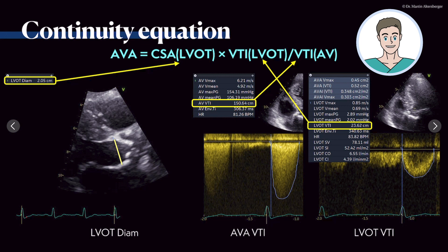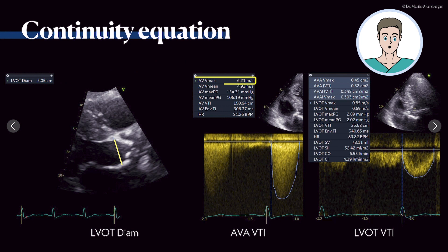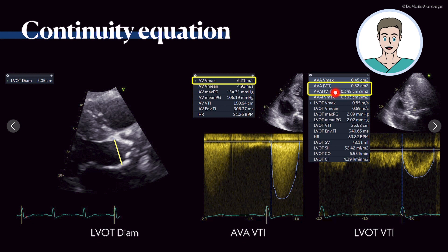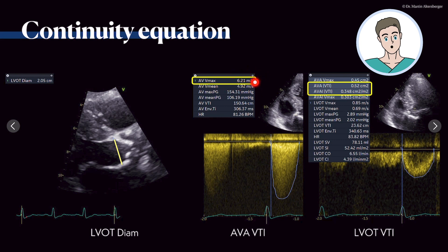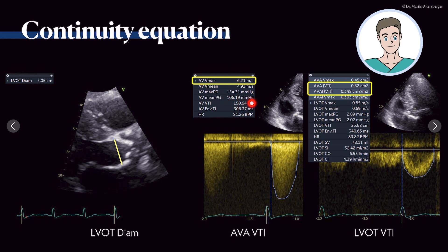When you calculate that, you can see this is truly a severe aortic stenosis: the aortic valve area is 0.52 square centimeters — a very, very small area for blood flow. This is truly severe, even critical aortic stenosis. Indexed, it is approximately 0.35 square centimeters per square meter body surface area. The maximum velocity is above 6 meters per second — 6.21 meters per second. The mean pressure gradient is an enormous 106 millimeters of mercury, compared to the severe threshold of 40 millimeters of mercury.